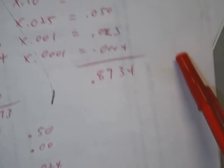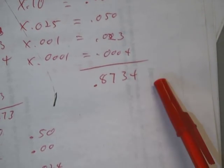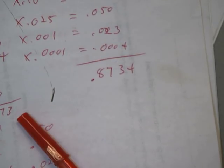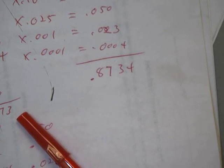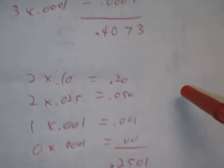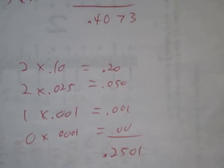All right, level 1, 0.8734. Level 2, 0.6173. Level 3, 0.556. Level 4, 0.4073. And level 5, 0.2501.